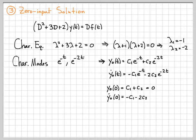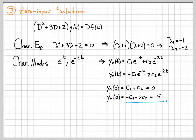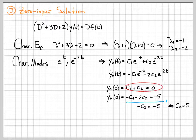Also, if I evaluate the derivative at time zero and replace all the t's with zeros, I end up with minus c1 minus 2c2, and I know this is equal to negative 5 from the previous work. So I now have two equations, two unknowns. If I just add these two equations, the c1's will cancel out, and I end up with minus c2 equals negative 5, which means c2 equals 5. And if c2 is equal to 5, then c1 must be minus 5.